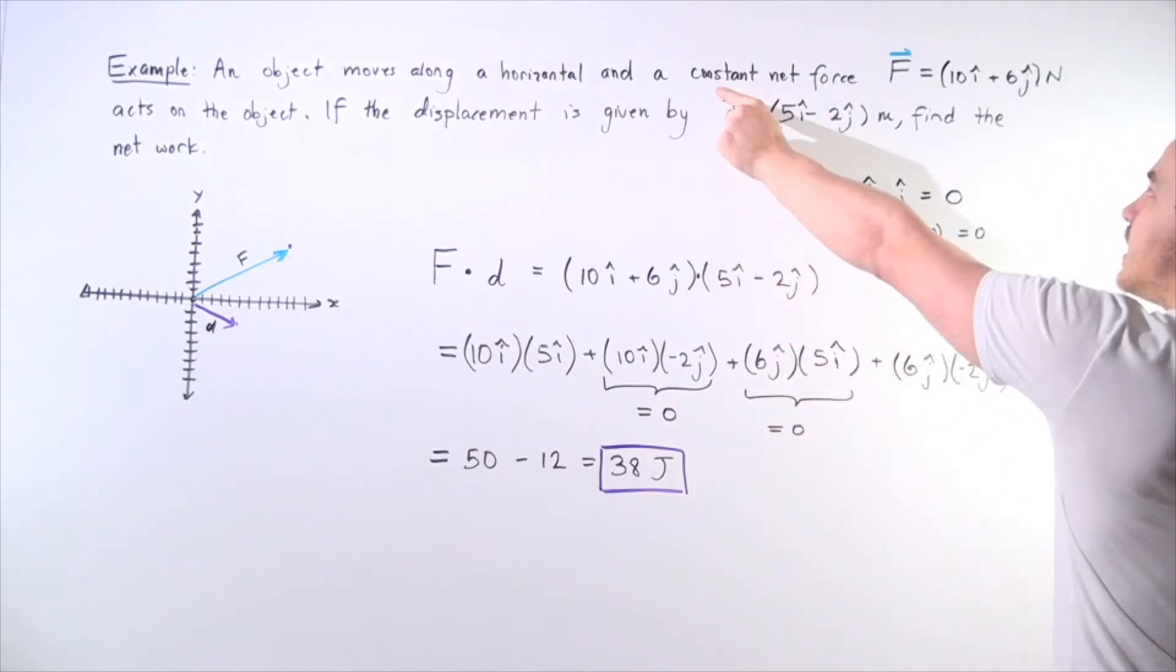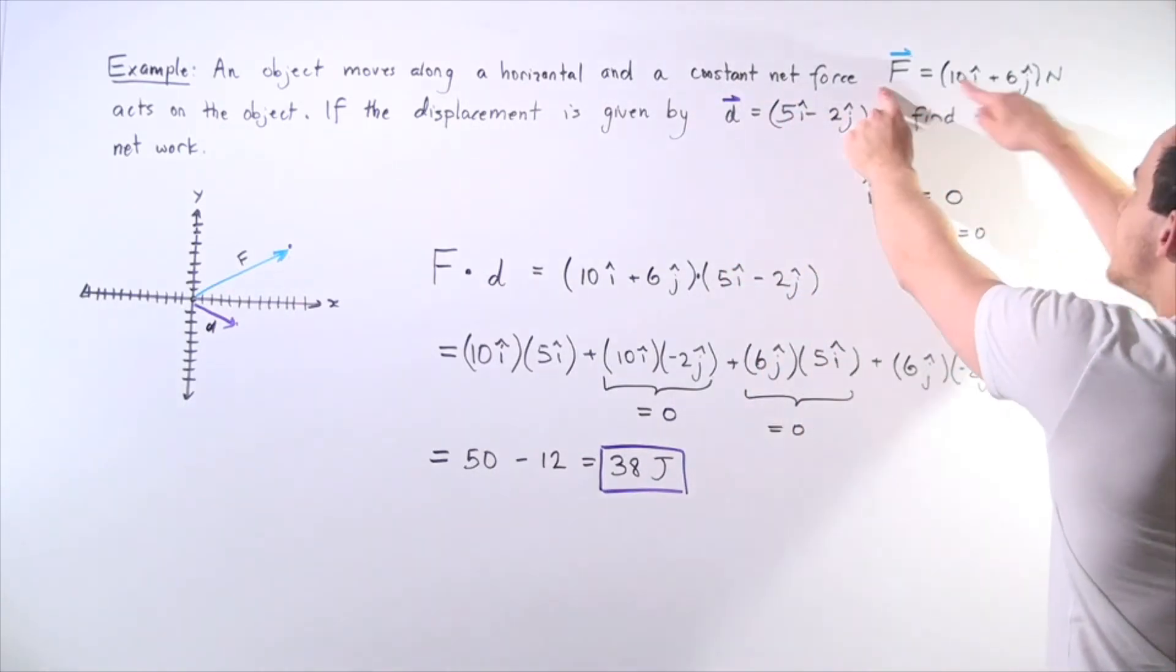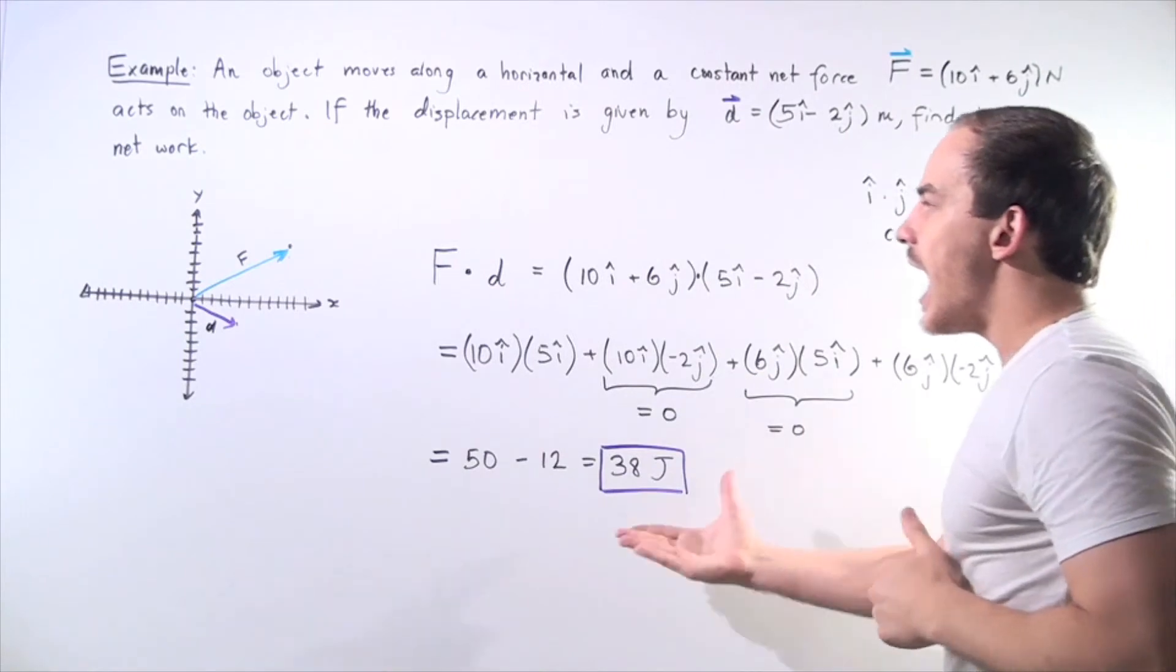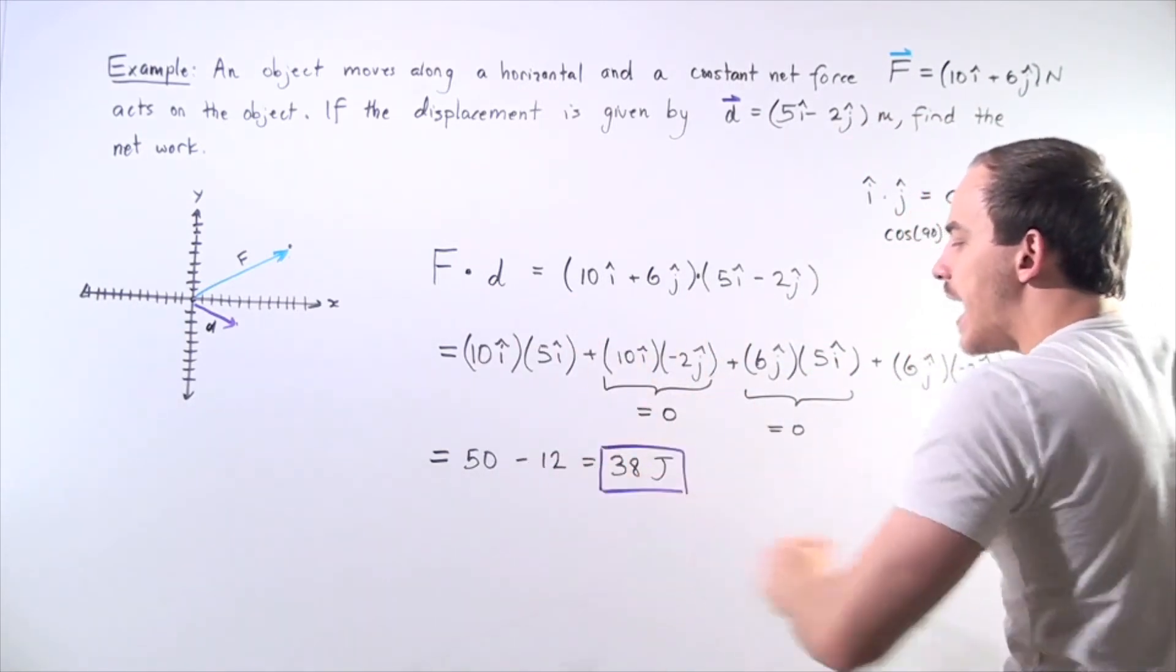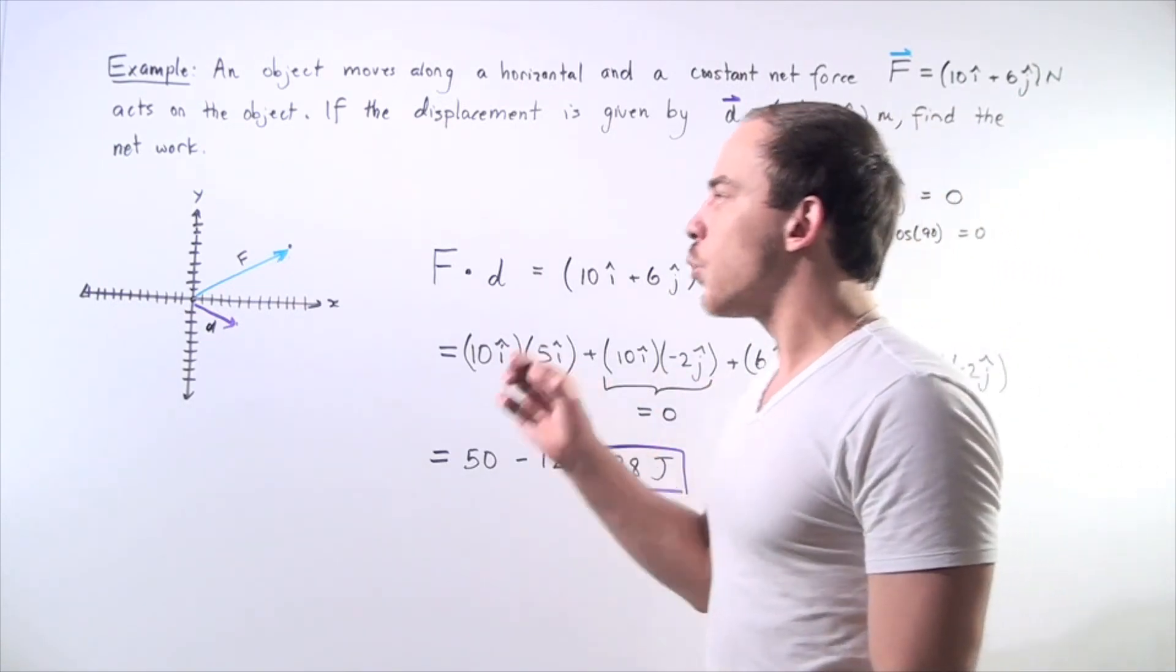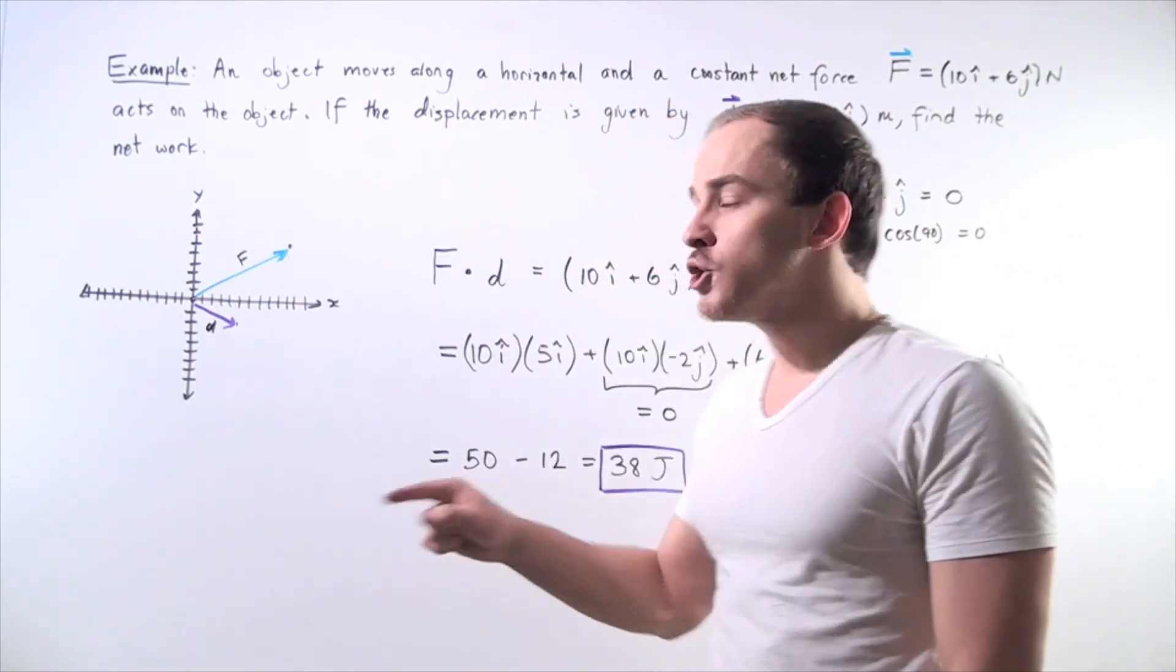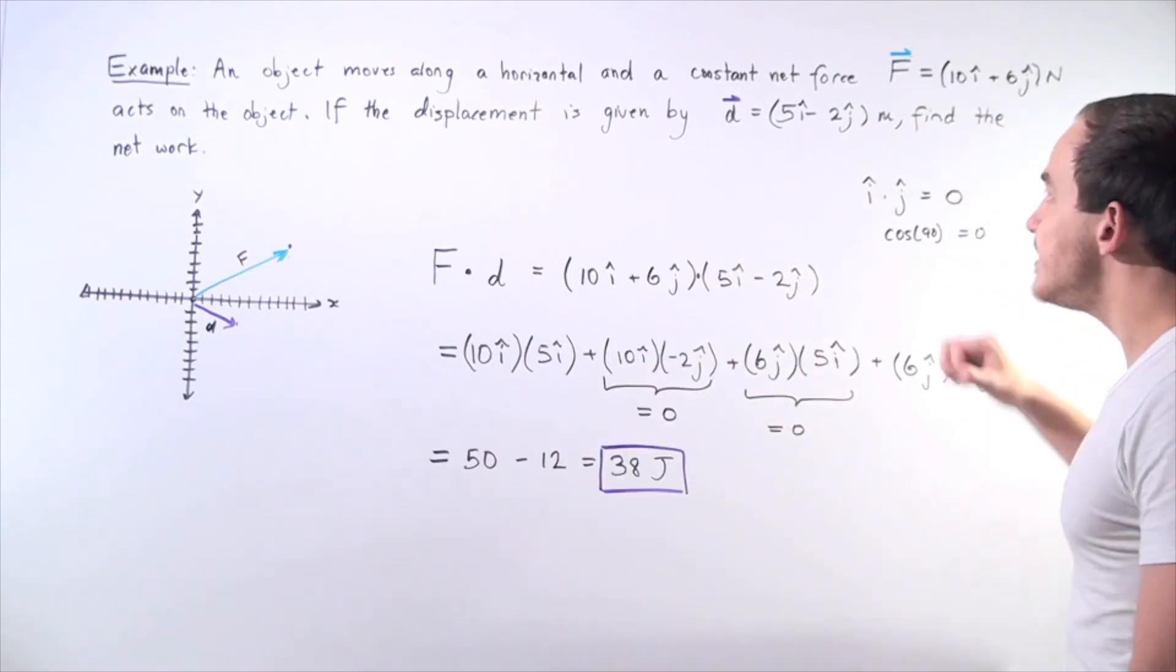So whenever we have a constant net force of this magnitude acting on our object, we have the following expenditure of energy. So 38 joules of work is done on my object to displace it this amount.